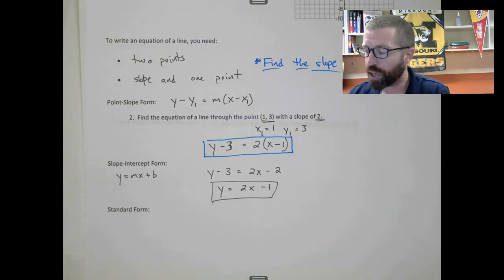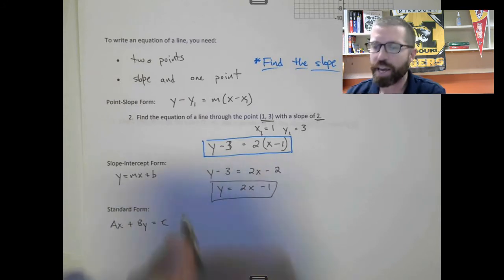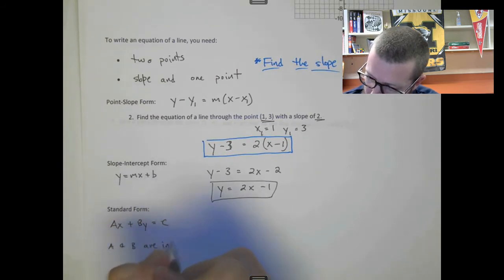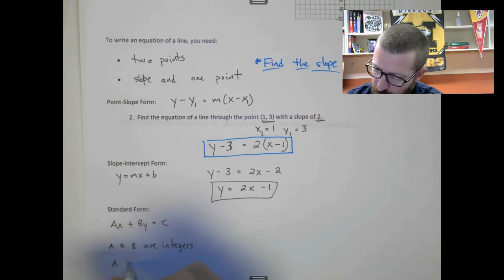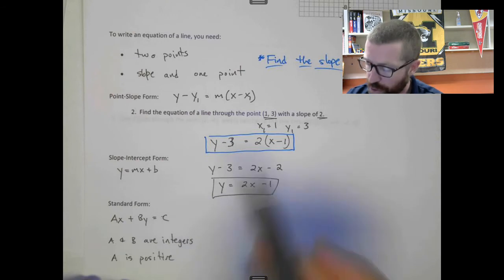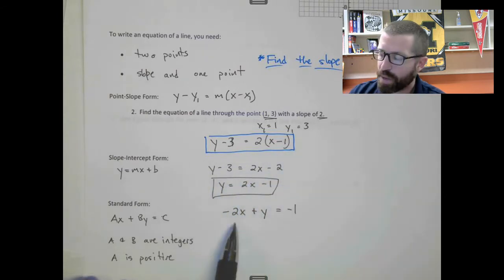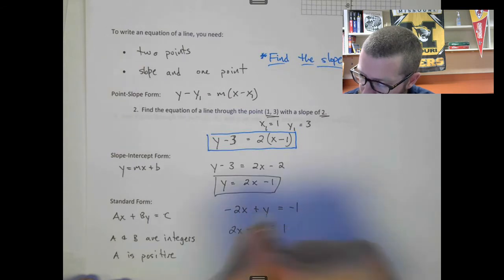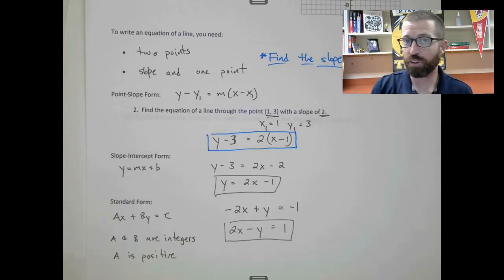And then standard form. Standard form is Ax + By = C, where A and B are integers — no fractions — and normally A is positive. So if I want to put this in standard form, the x's and y's have to be on the same side, so I subtract 2x. Then to make A positive, change the sign of everything: 2x minus y = 1. And this is standard form. So those are all three forms for the same line.